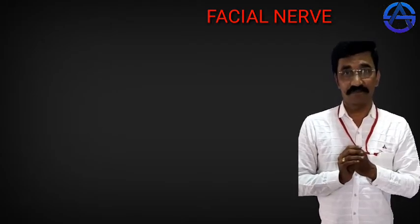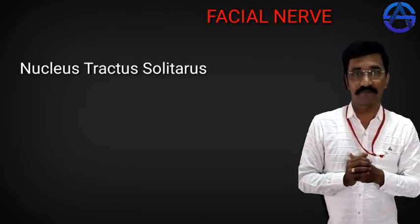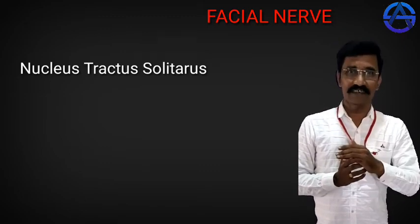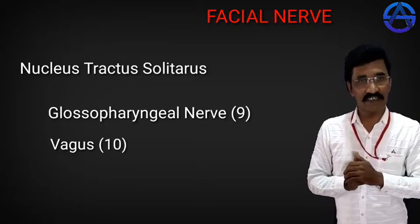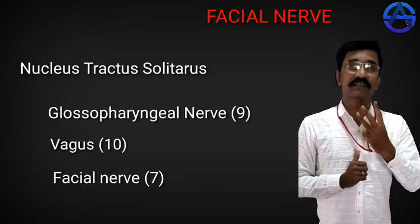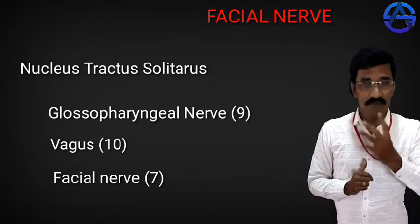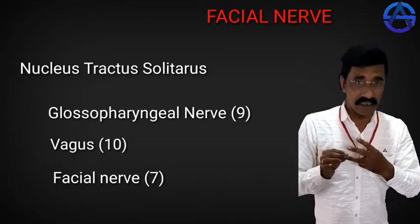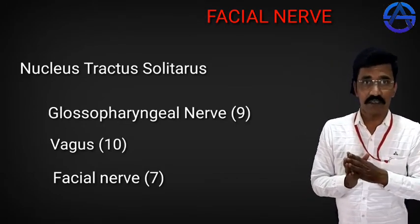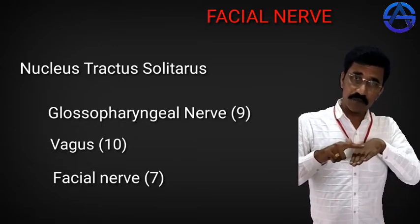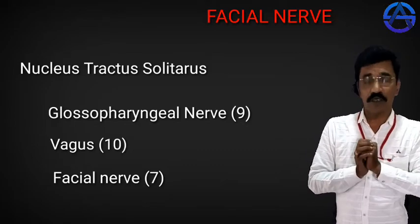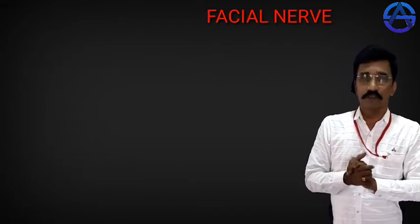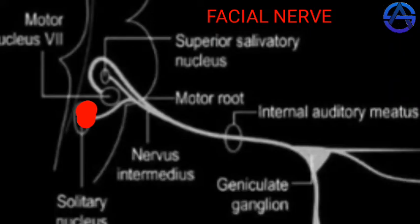Number three: taste. From the MCQ video, we know that Nucleus tractus solitarius (NTS) gives fibers to the 9th, 10th, and 7th cranial nerves. All three nerves are concerned with taste. Among them, the facial nerve is concerned with the anterior two-thirds of the tongue; glossopharyngeal for the posterior one-third; and vagus for the last part. So from the nucleus tractus solitarius, the taste fibers run with the motor fibers and also enter the internal acoustic canal.